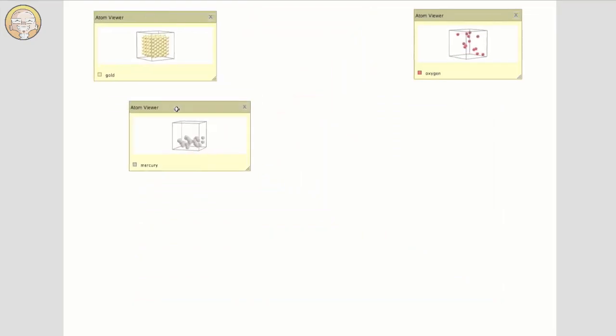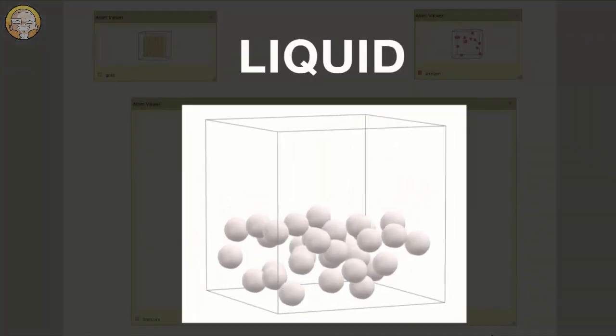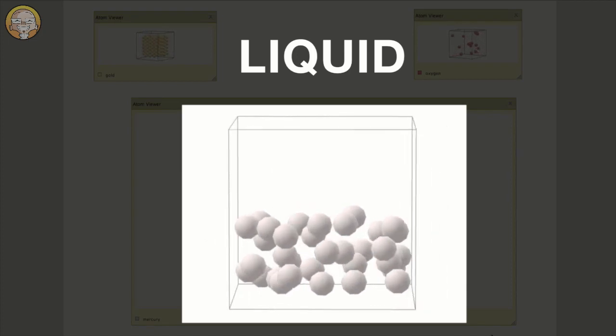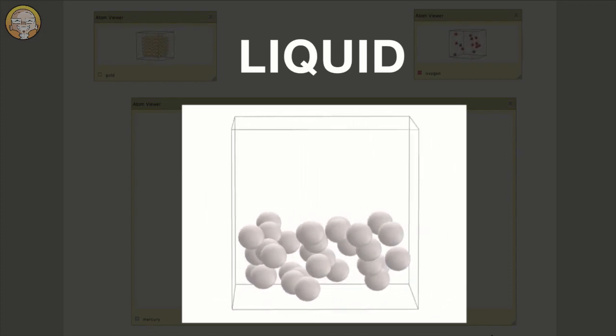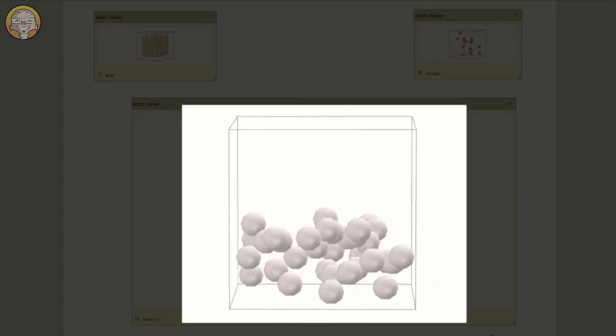Now, if we take a close look at the liquid state, we can see that the particles have a bit of space between them, enough for the particles to slide past one another. Since the particles can change position, liquids have the ability to flow.